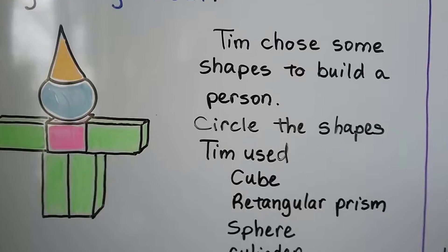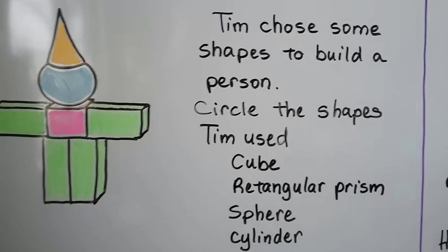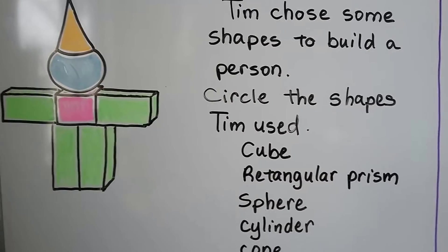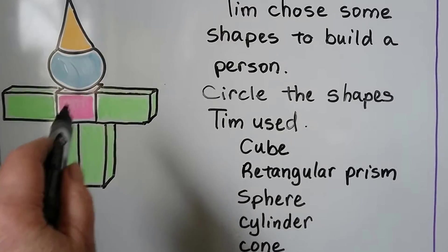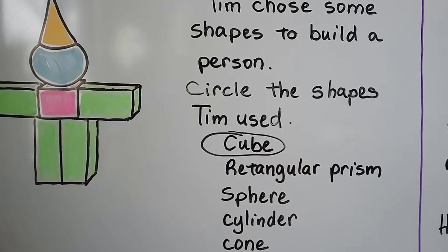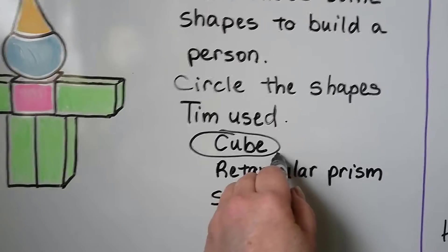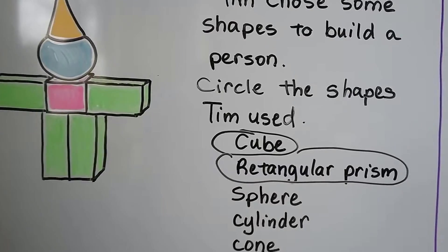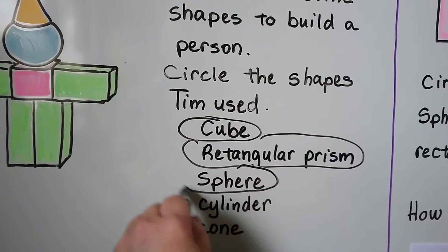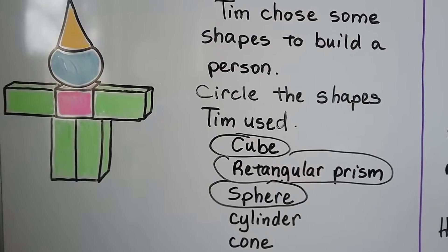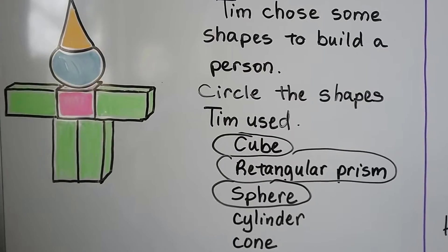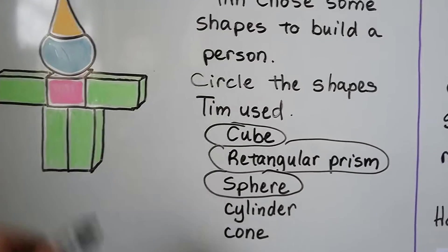Tim chose some shapes to build a person. Circle the shapes Tim used. Do you see that he used a cube? There's one right here for the body. Did he use rectangular prisms? Yes — that's the arms and the legs. Do you see a sphere? Yes, there's a sphere for the head. Are there any cylinders? No, I don't see any cylinders. What about a cone? Yes, he's got a cone for a hat!